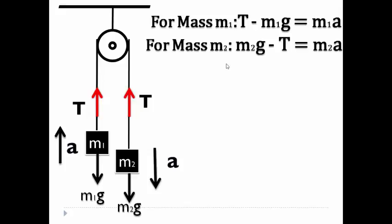For mass M2, here T is trying to pull M2 upwards but is not getting successful. Hence M2 G minus T will be equals to M2 A.